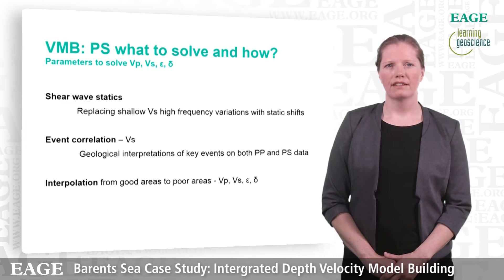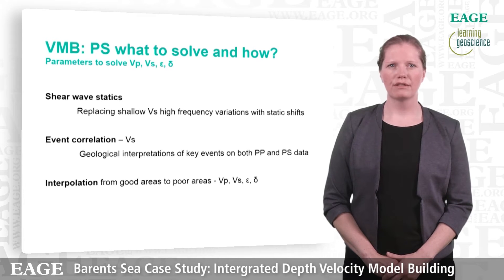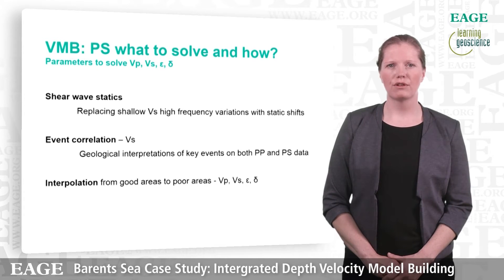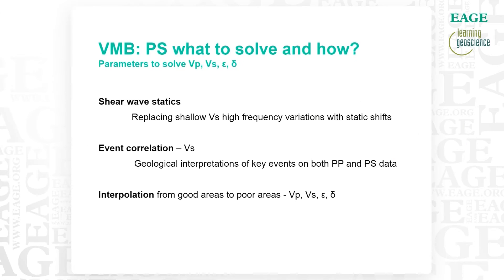For PS, which is the combination of pressure energy going down and shear energy coming up, we need the same parameters as for PP, but in addition we need a shear velocity. We assume that the horizontal components of the velocities are the same. An important factor is the shear wave statics, which is a static that can replace shallow VS high frequency variations. And the main tool to solve the shear velocity is event correlation, along with interpolation from good areas to poor areas.